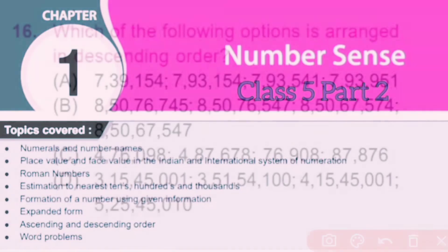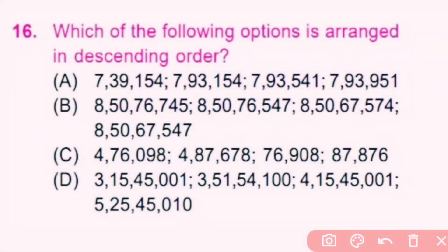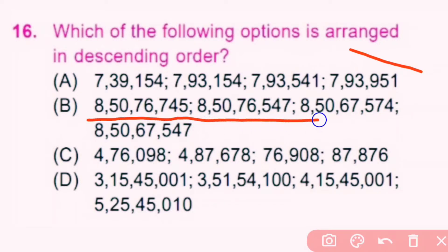Let's start with question number 16. Which of the following options is arranged in descending order? Descending order means numbers arranged from big to small. Here, in the given options, only option B is arranged in descending order. B is the correct answer.